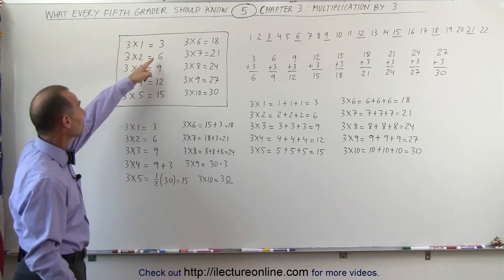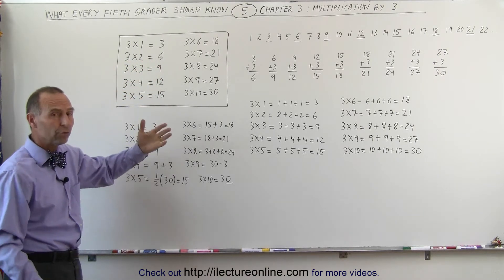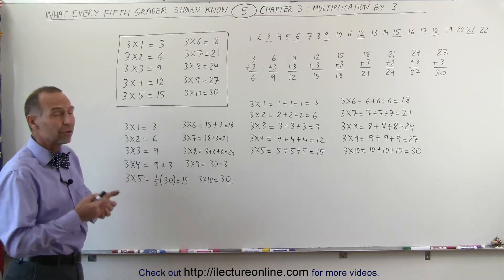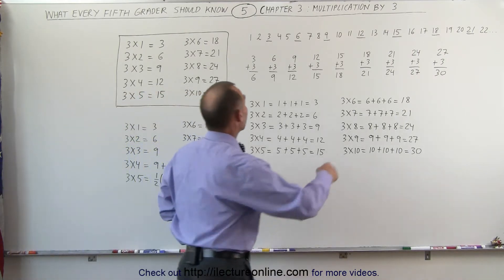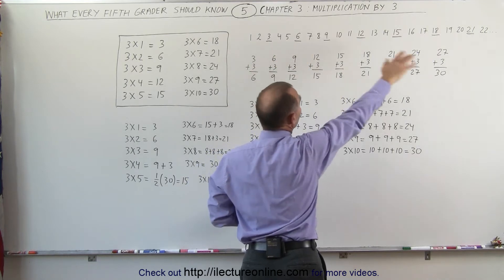3 times 1 is 3, 3 times 2 is 6, 3 times 3 is 9, 3 times 4 is 12, and so forth. What you can do here is look at the numbers and realize that we grab every third number in the set of numbers going from 1 to infinity.